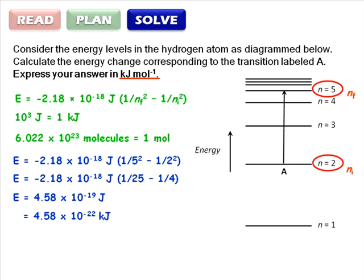Finally, convert from energy required for one molecule to make the transition to energy required for a whole mole of molecules to make the transition. 4.58 times 10 to the negative 22 kilojoules times Avogadro's number, 6.022 times 10 to the 23 per mole. This gives us an answer of 276 kilojoules per mole.